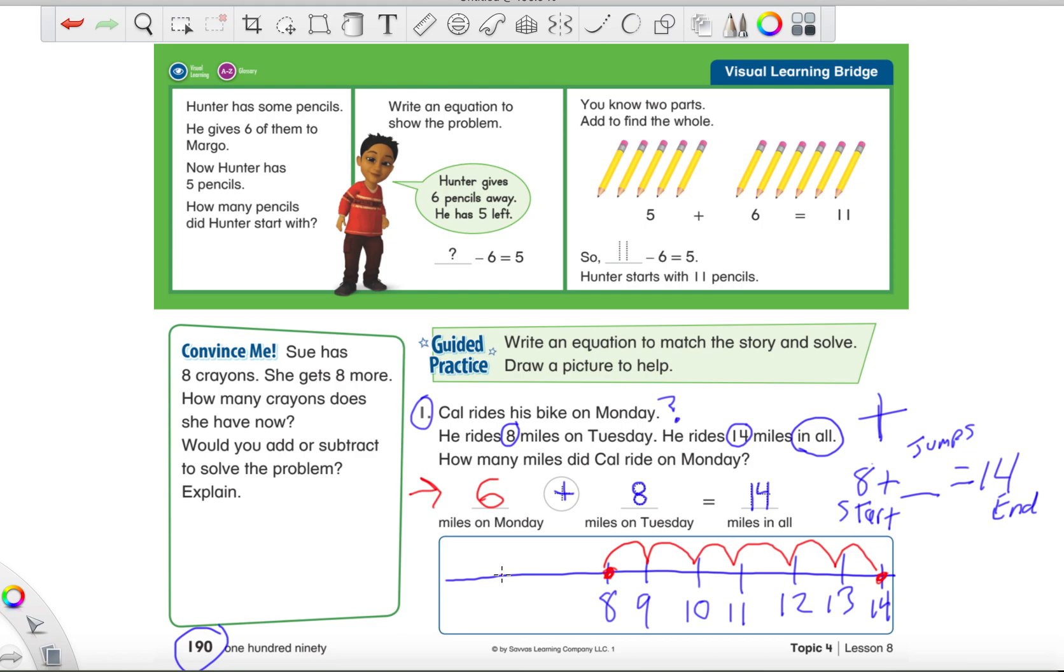Now, if you want to be fancy about it, you could also think of subtraction as helping us solve this. And you might be thinking, Mr. Montgomery, you're crazy. It says addition. But if you remembered, we can always use a related fact to help us solve any problem we want. We could also look at it as, I'll show you a quick example. We'll draw 14 circles. 1, 2, 3, 4, 5, 6, 7, 8, 9, 10, 11, 12, 13, and 14.